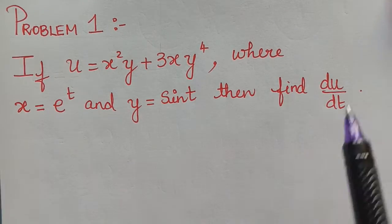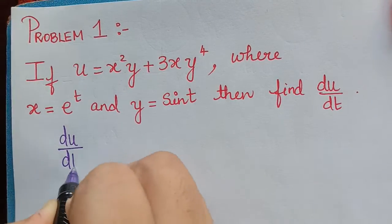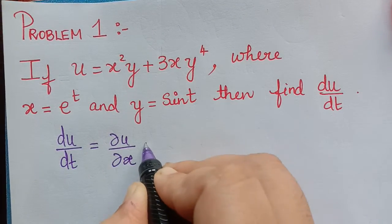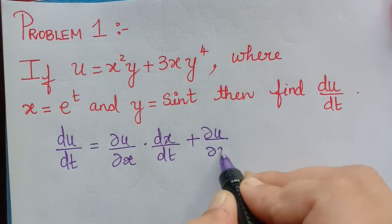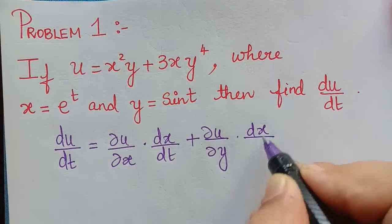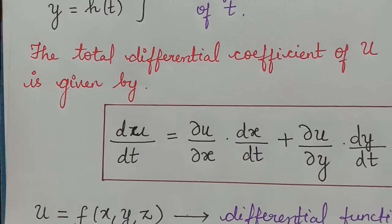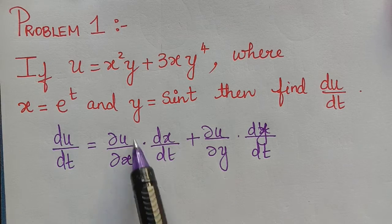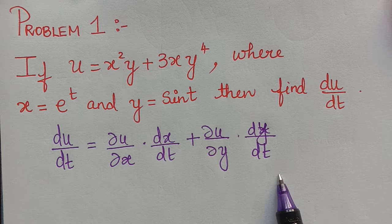We know that the total differential coefficient of u is given by: du/dt = (∂u/∂x)(dx/dt) + (∂u/∂y)(dy/dt). We have taken and written this formula here. Now we have to find each part separately and substitute into this formula.